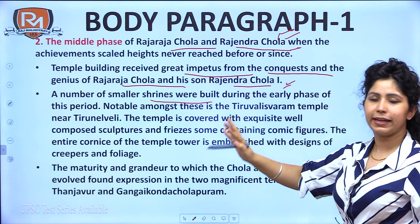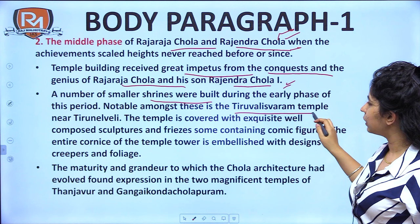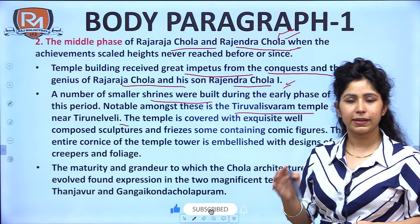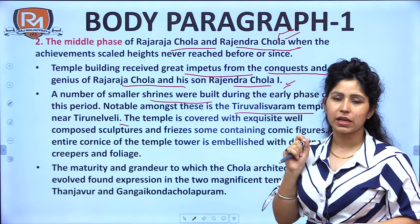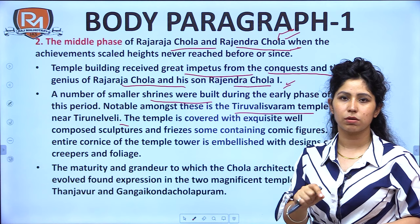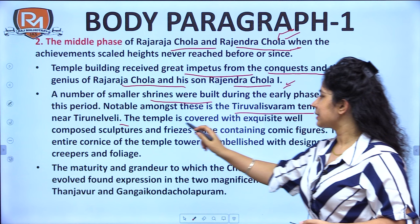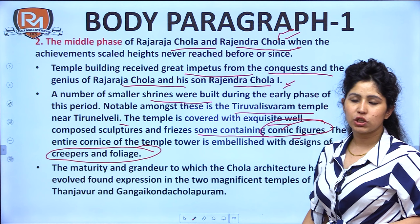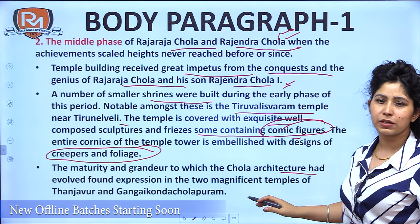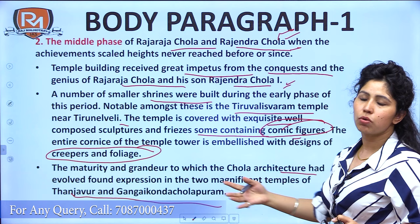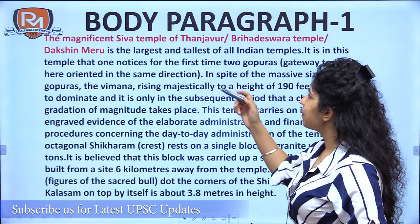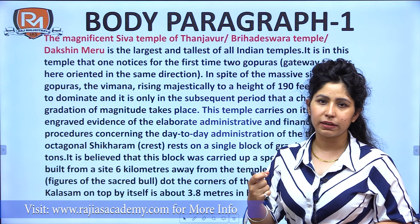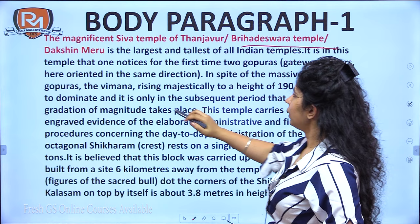A number of small shrines were built in the earlier phase. Notable among these was the Thiru Valeswaram temple near Thiru Neveli. Make sure to write names of temples — we will be talking about the Brihadeshwara temple, also known as the Dakshin Meru, but other temples are important too. The temple is covered with exquisite well-composed sculptures and friezes, some containing comic figures, embellished with creepers and foliage. The maturity and grandeur of Chola architecture found expression in the two magnificent temples of Thanjavur and Gangaikonda Cholapuram — we will discuss the Brihadeshwara or Shiva temple of Thanjavur in detail.